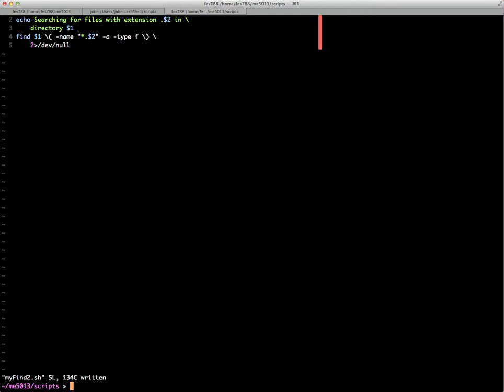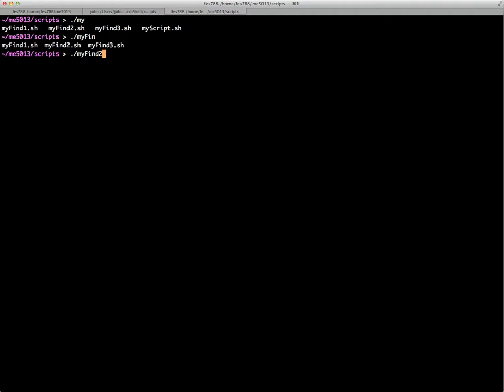So we can go ahead and the best way to show this is by example. So if we run this, myfind2. And this time, the first argument, because I defined it to be this way, is going to be the directory we want to search. So home FES 788 will be the directory and we want to search for files called tech.